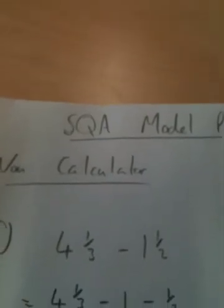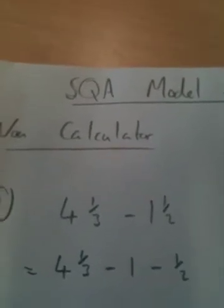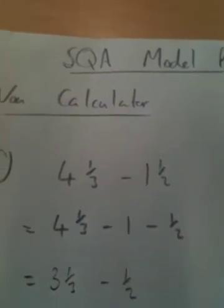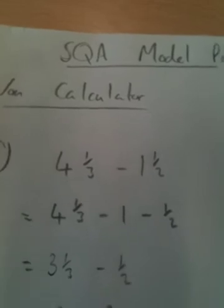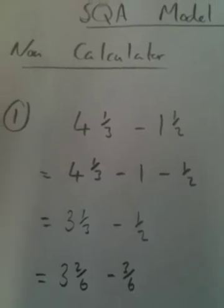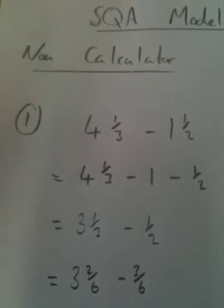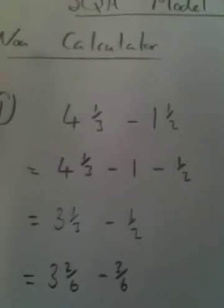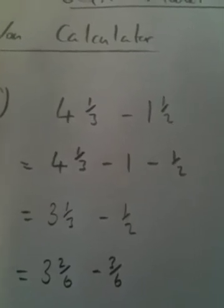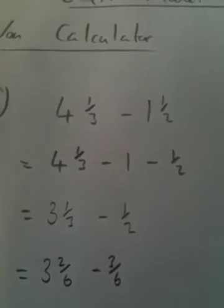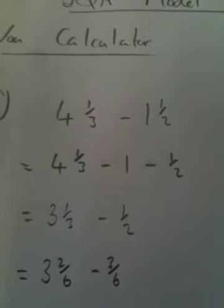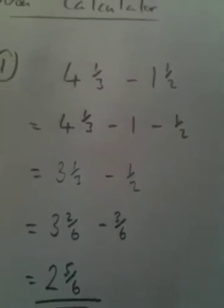Four and one-third subtract one and a half. I'm going to split that up into four and one-third subtract one, then subtract a half. Four and a third subtract one is three and a third, still got to take away that half. We need to write thirds and halves with a common denominator, so I can double the top and bottom of the third to turn it into sixths, triple the top and bottom of the half to get it into sixths. So I have three wholes and two sixths, subtract three sixths. If I take two sixths off, I'll get three wholes, so I've got one more sixth to take off, so that'll be two wholes and five sixths.